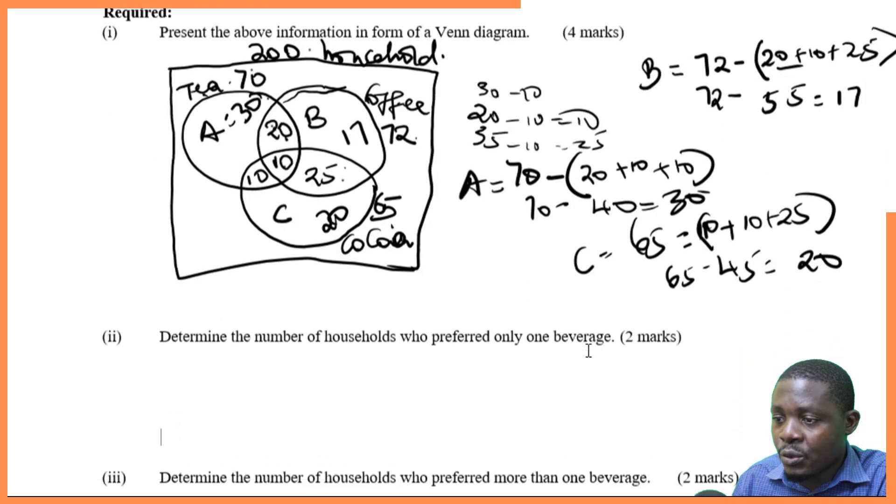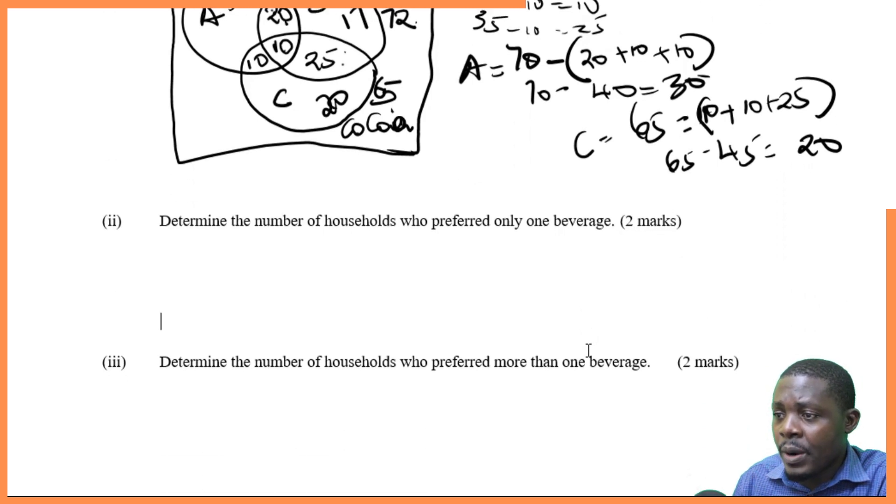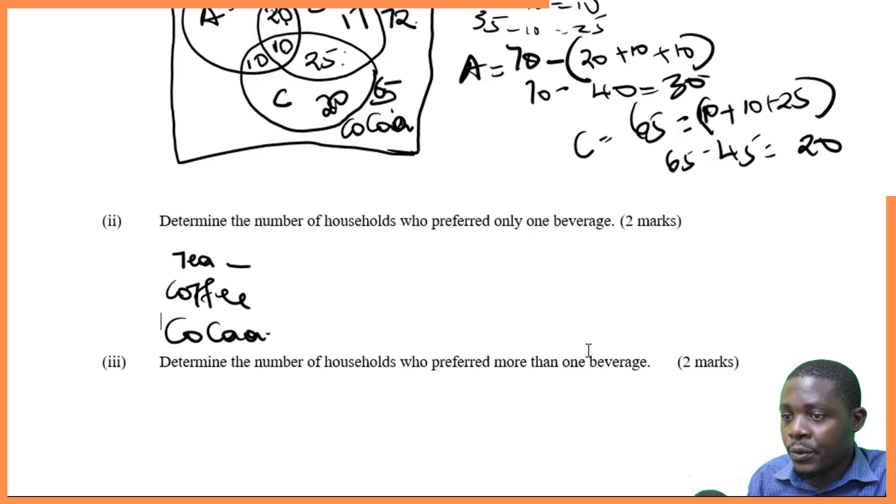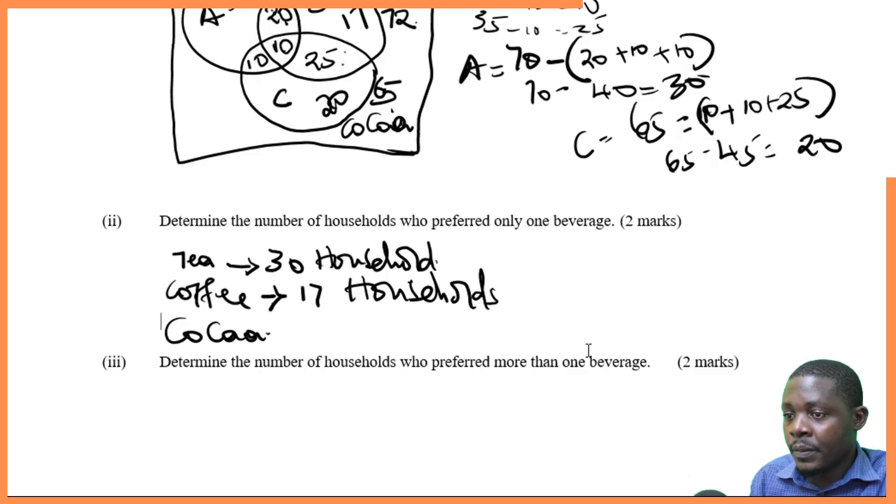Now let's address the questions. Determine the number of households who preferred only one beverage. We can write here those who preferred only tea, coffee, and then lastly cocoa. Those who only took tea, we had 30 households. Those who only consumed coffee, we said that they were 17 households. And those who only took cocoa, we have 20 households.